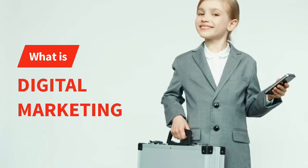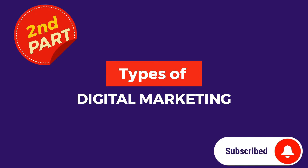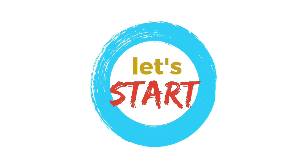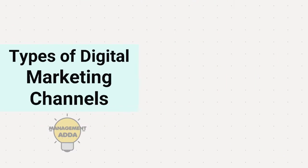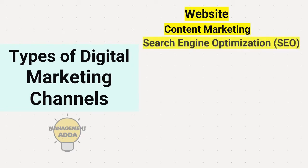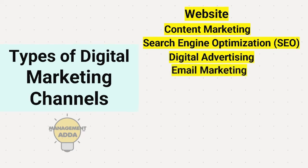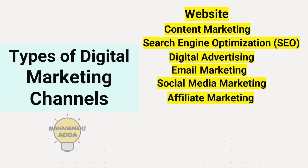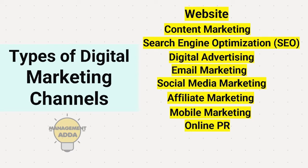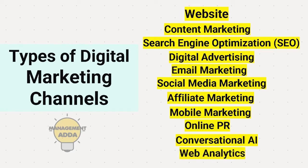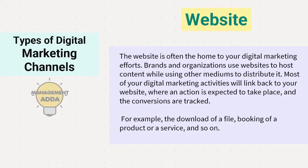In our last video we saw what digital marketing is. In this video we will see the types of digital marketing. The types include: website, content marketing, search engine optimization, digital advertising, email marketing, social media marketing, affiliate marketing, mobile marketing, online PR, conversational artificial intelligence, and web analytics. Let us see all of these in detail.